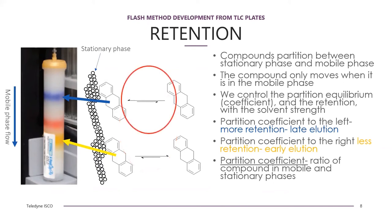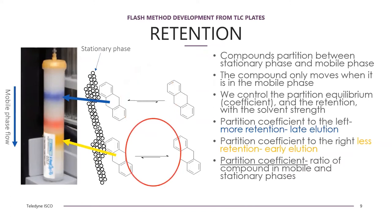If the equilibrium is towards the left, as depicted here, where the compound is mostly adsorbed on the stationary phase, the compound elutes later. This is true whether it happens inside a column or on the surface of a TLC plate. When equilibrium is towards the right, the compound spends more time in the mobile phase, so it comes off the column early or runs up the TLC plate early.